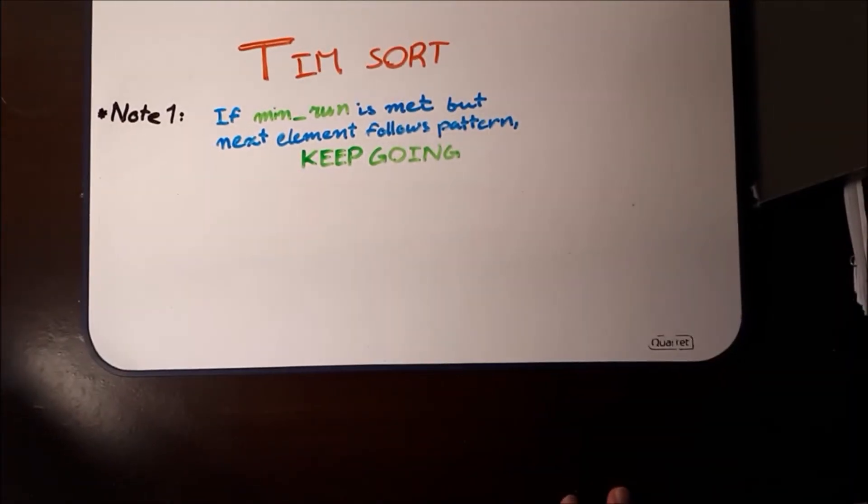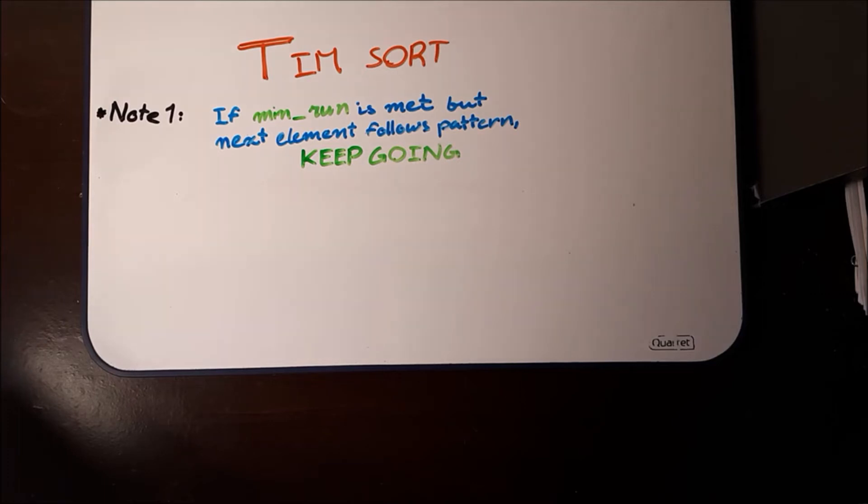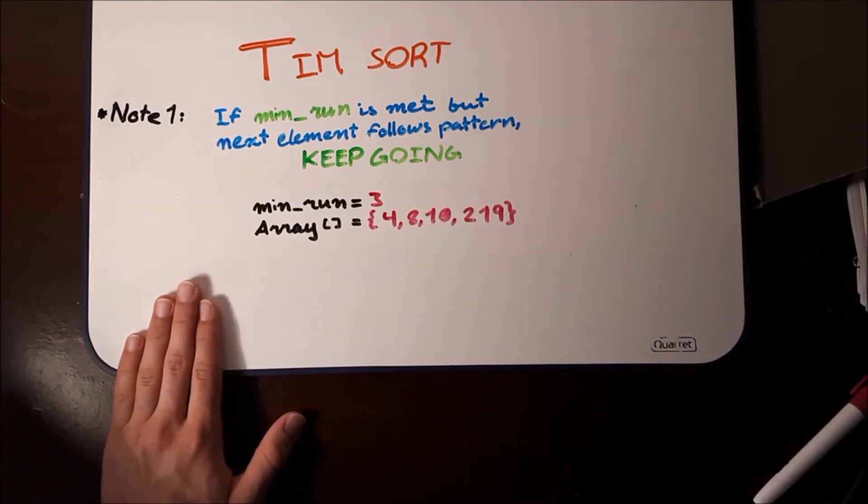Another feature of Timsort is that if minrun is met, but the next element follows the pattern, it keeps going. So in this example, where minrun is 3, and the array has the elements 4, 8, 10, and 12,